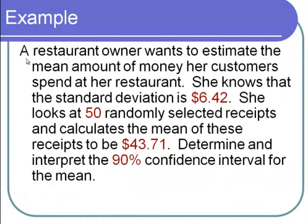Here's another example. A restaurant owner wants to estimate the mean amount of money her customers spend. She knows the standard deviation is $6.42. She looks at 50 randomly selected receipts and calculates the mean to be $43.71. Determine and interpret the 90% confidence interval for the mean. We know the population standard deviation — not likely in the real world, but we'll say it's true. This is not a yes-or-no question: the answer is an amount like $44, so it's a mean, not a proportion.